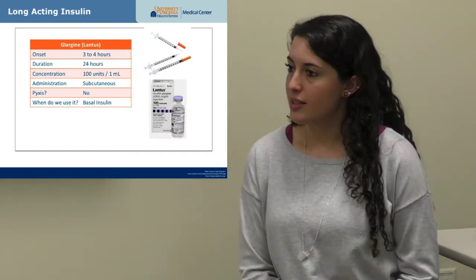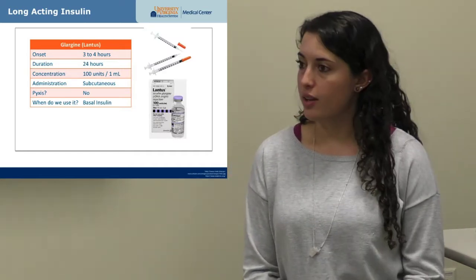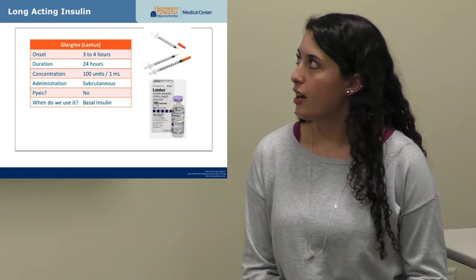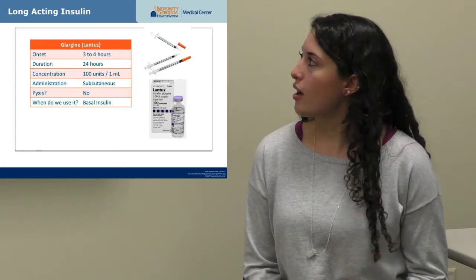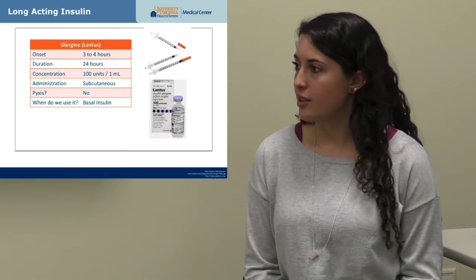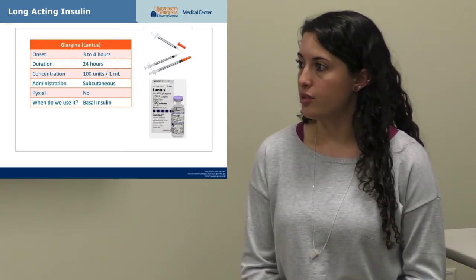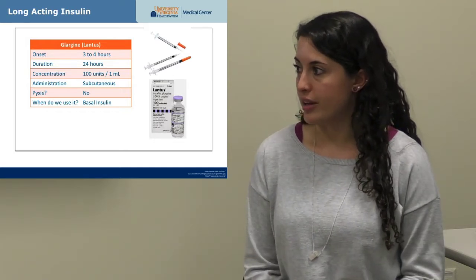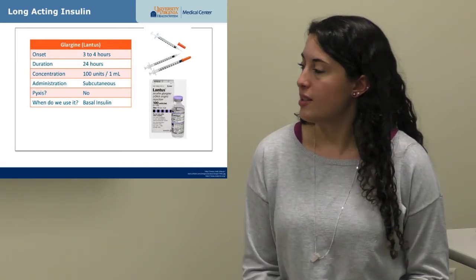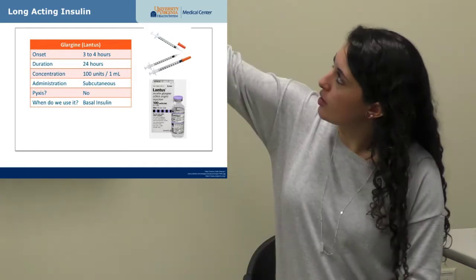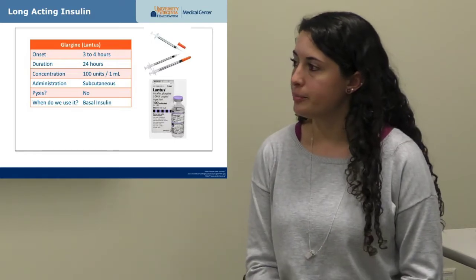Our longest-acting insulin is insulin glargine — Lantus here at UVA. It takes three to four hours to start working and is used as a basal insulin, providing background coverage rather than covering meals or glucose spikes. This one is also not kept in the Pyxis; it would come already drawn up in an insulin syringe from the IV room.